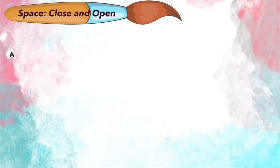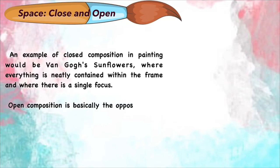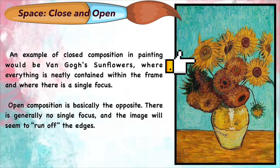Closed and open space. An example of closed composition in painting would be Van Gogh's Sunflowers, where everything is neatly contained within a frame and where there is a single focus. Open composition is basically the opposite. There is generally no single purpose and the image would seem to run off the edges.